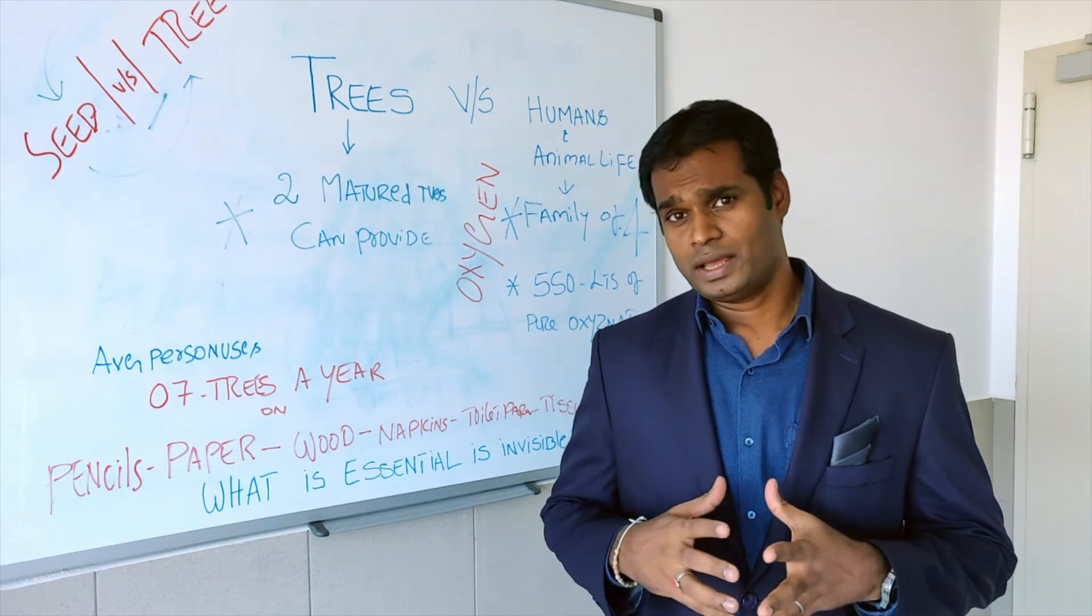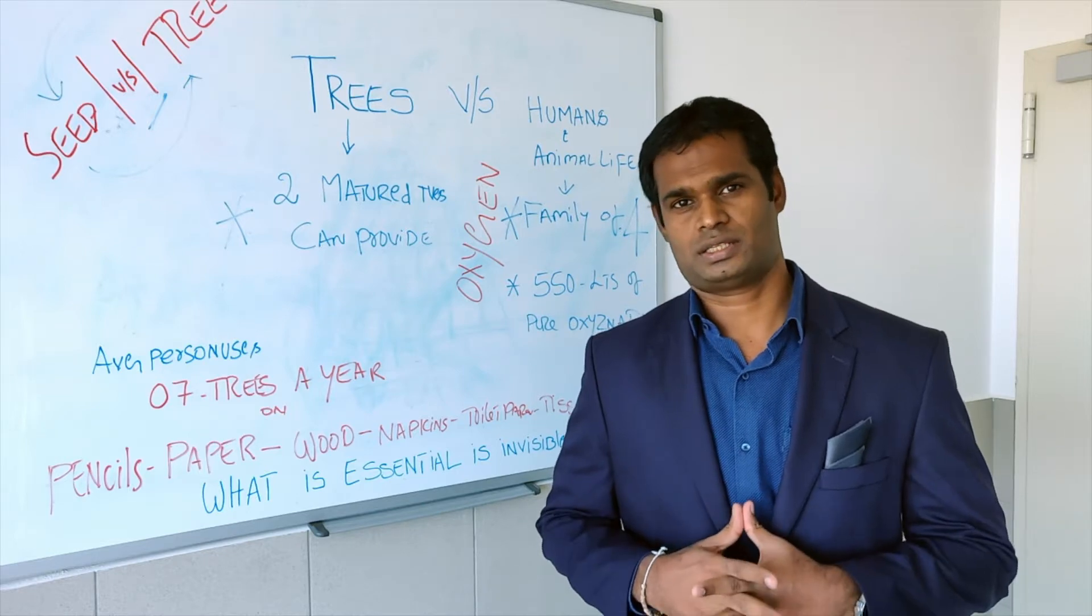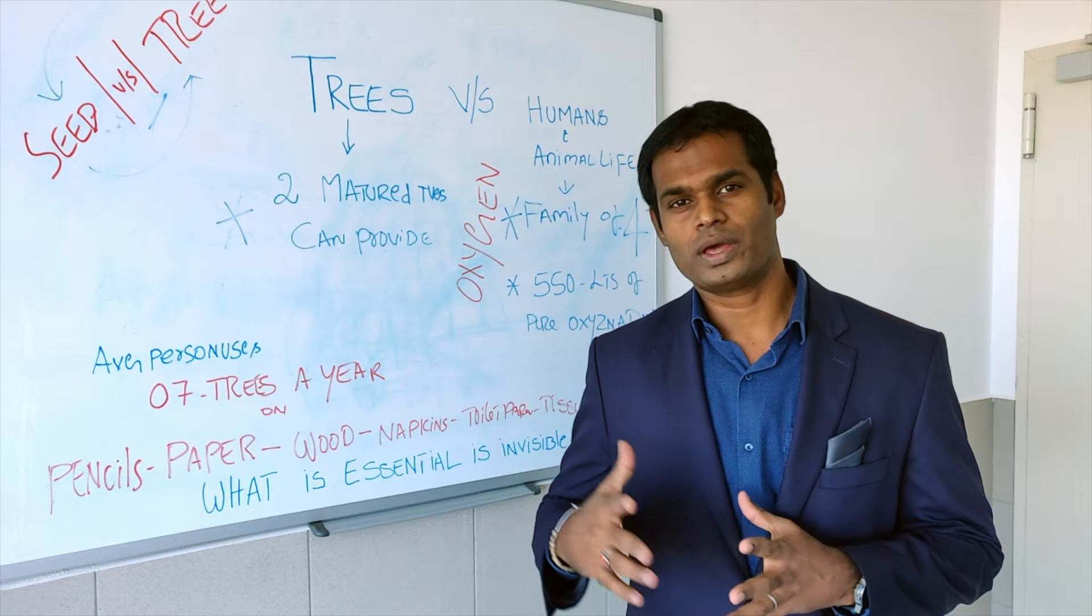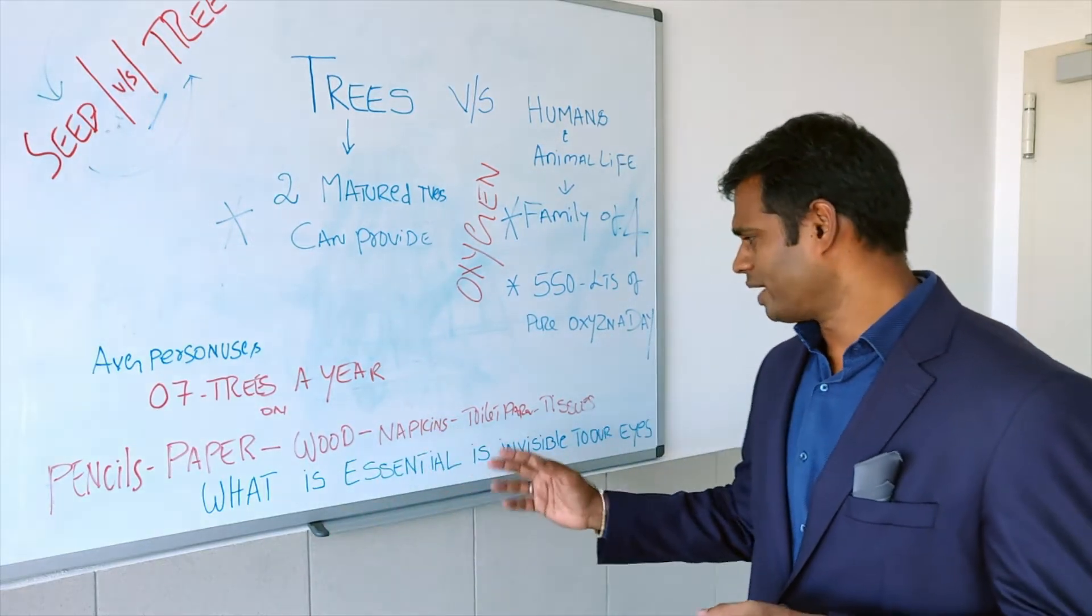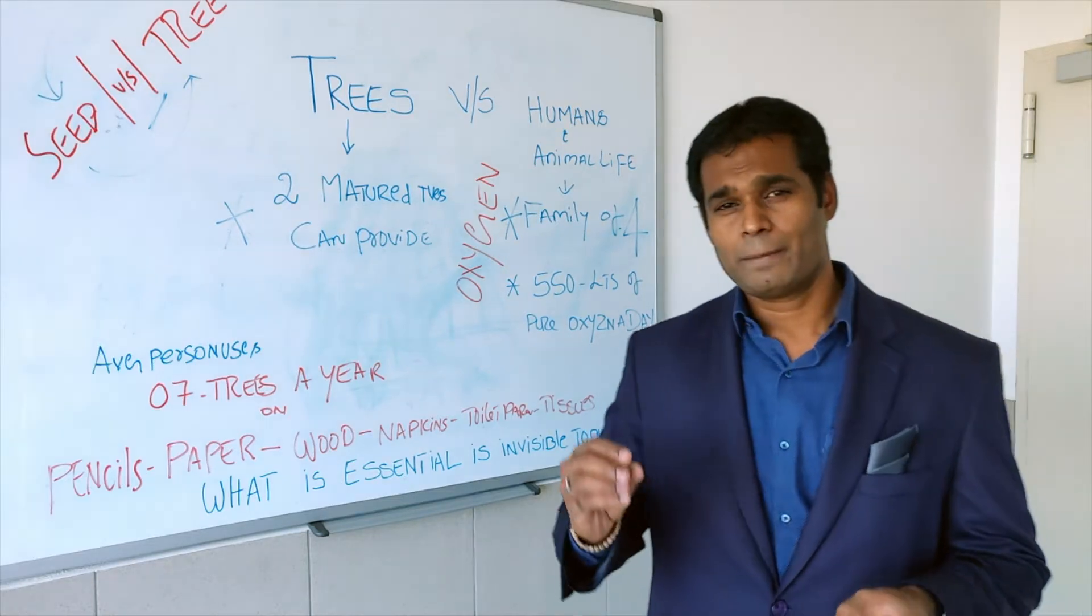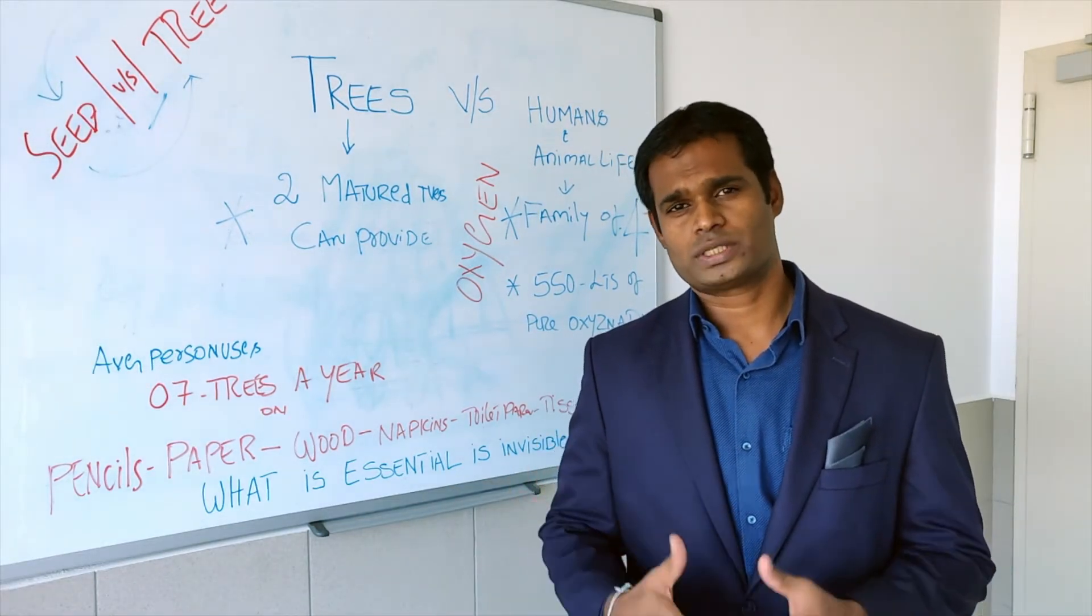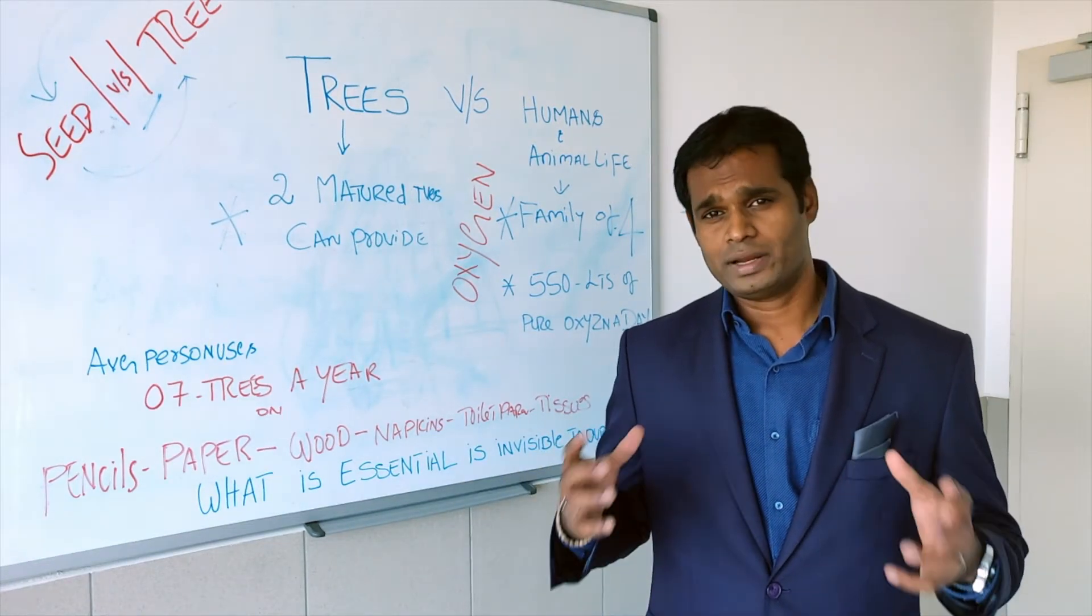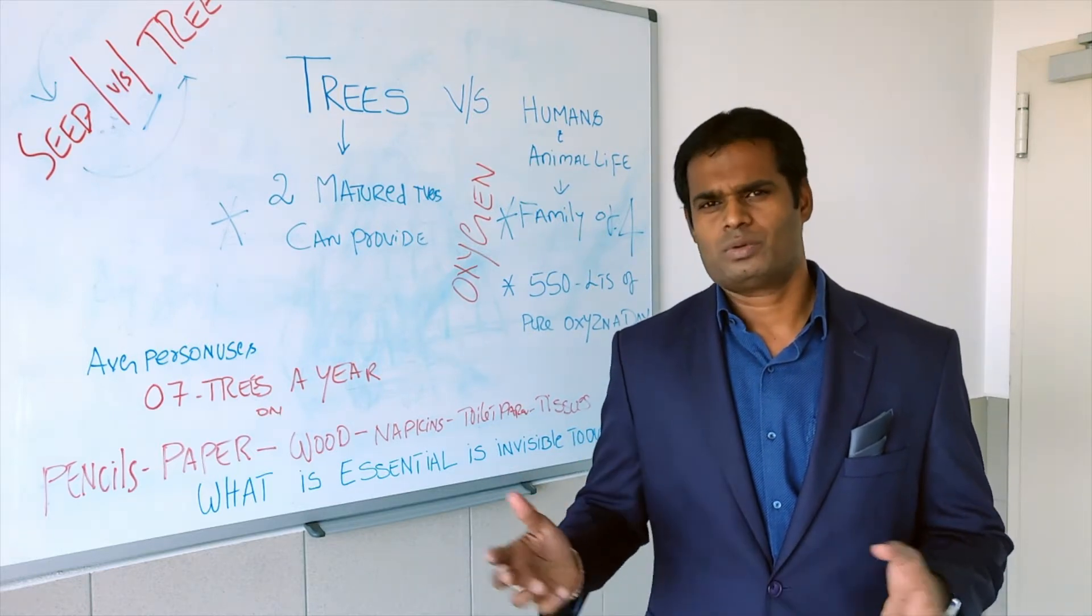For industrial purposes, each person uses about seven trees in a year's time. Imagine where we are heading in the form of your paper, pencils, wood, napkins, toilet and tissue papers. Anything related to paper obviously comes from the tree. A tree is so useful to all of us for the entire humanity, but I think it's our moral responsibility to respect it.